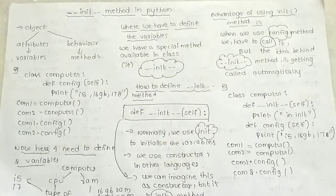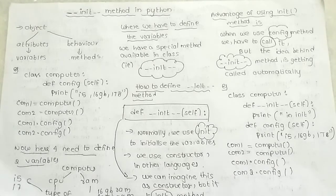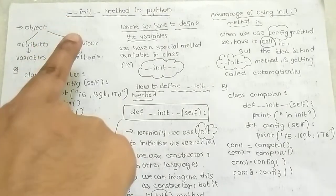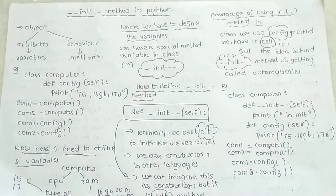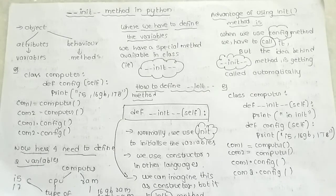Hello everyone. I am going to explain the unique method in Python. This method is a special method. The attributes are attributes and behavior. Attributes are variables, behavior are methods.